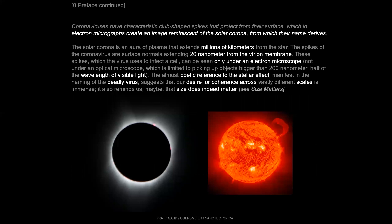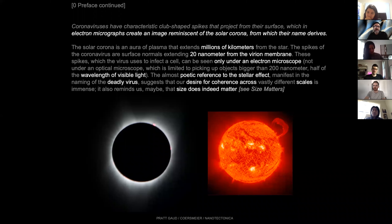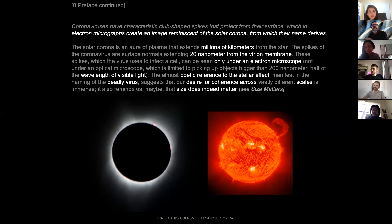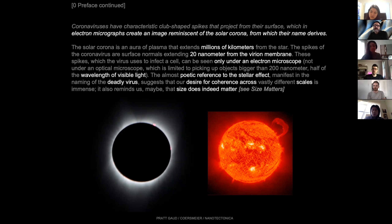This is the naming of that virus — which doesn't come from the crown itself, but specifically the solar corona: that aura of plasma that extends millions of kilometers like surface normals from the star. But the name actually refers to the spikes of the virus, which are 20 nanometers — not something you could see optically, because it's smaller than the wavelength of light. So we're using the electron microscope, which you've probably heard is a kind of prompt in the seminar. There's a certain poetics between this deadly virus and the solar halo.